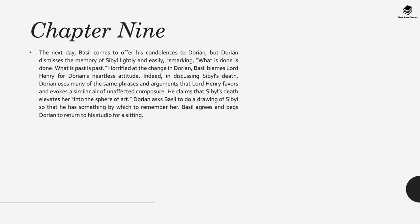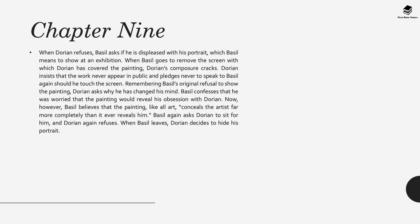In chapter nine, the next day Basil comes to offer his condolences to Dorian. But Dorian is very callous and has dismissed the memory of Sybil quite lightly, remarking 'What's done is done, what has passed is passed.' Basil is horrified at this change and blames Lord Henry for Dorian's heartless attitude. Indeed, in discussing Sybil's death, Dorian uses many of the same phrases and arguments that Lord Henry offers. When Dorian refuses to acknowledge any remorse or responsibility, Basil asks if he's displeased with the portrait, which Basil now wants to show at an exhibition.